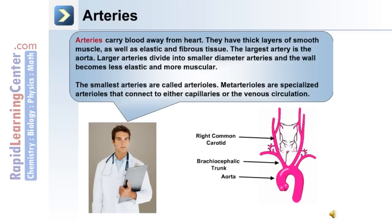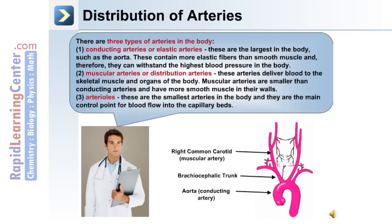Meta-arterioles are specialized arterioles that connect to either capillaries or the venous circulation. There are three types of arteries: conducting arteries, muscular arteries, and arterioles. Conducting arteries, or elastic arteries, are the largest — an example is the aorta — and contain more elastic fibers than smooth muscle, allowing them to withstand the highest blood pressure. Muscular arteries, or distribution arteries, deliver blood to skeletal muscle and organs and have more smooth muscle in their walls. Arterioles are the smallest arteries and are the main control point for blood flow into the capillary beds.